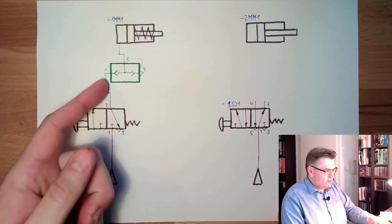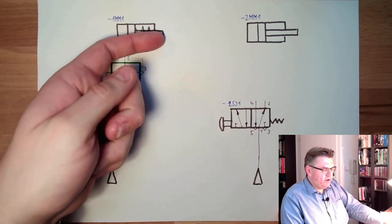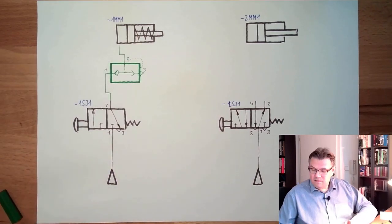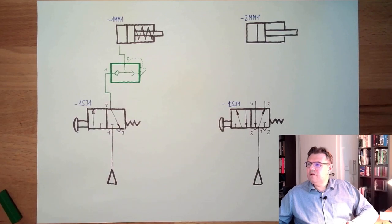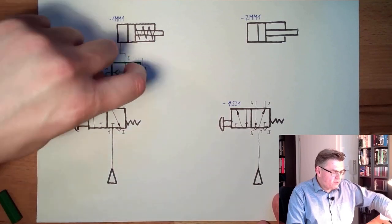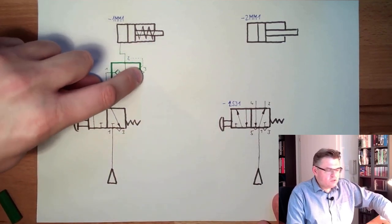So if I press the button, we will fill the cylinder. The cylinder is traveling outside. If I release the button, then the cylinder is traveling inside again. However, quite fast, because this will simply be exhausted here.